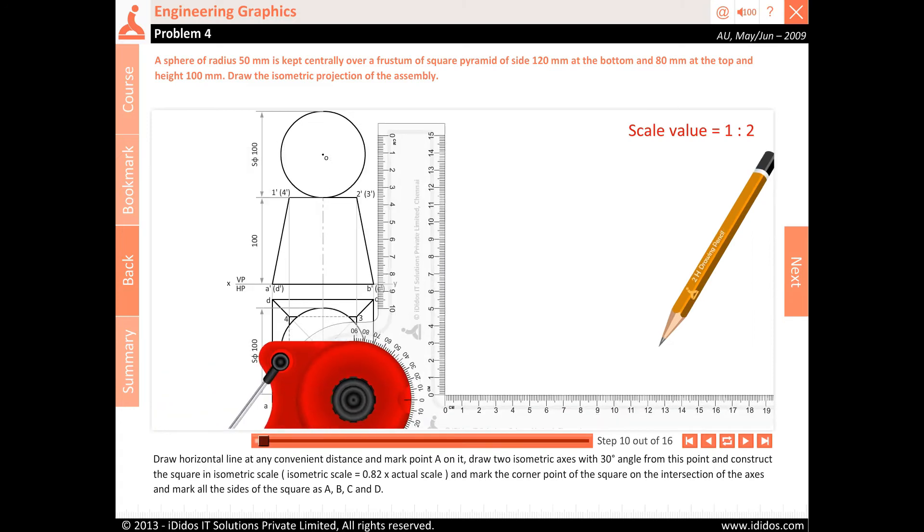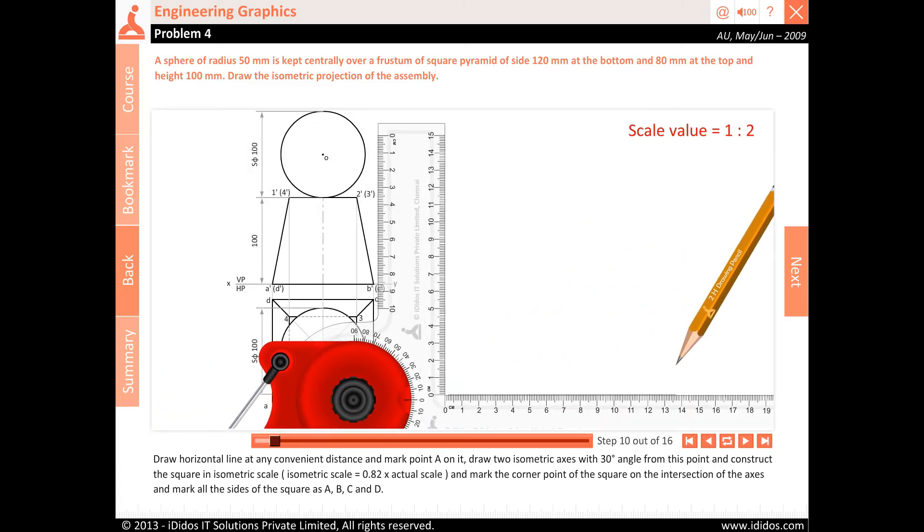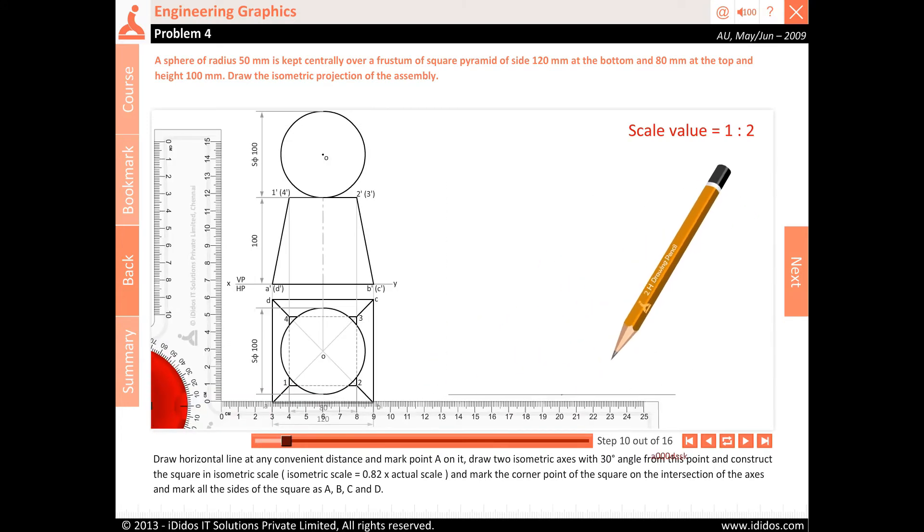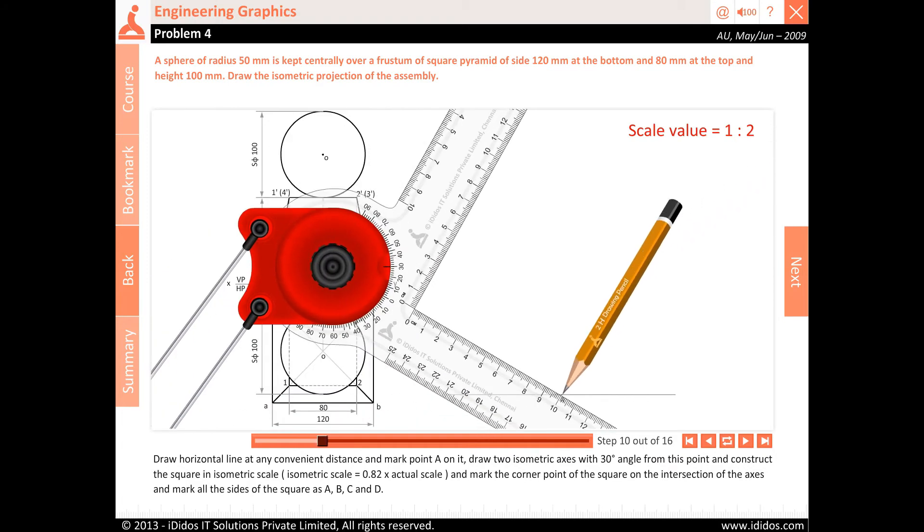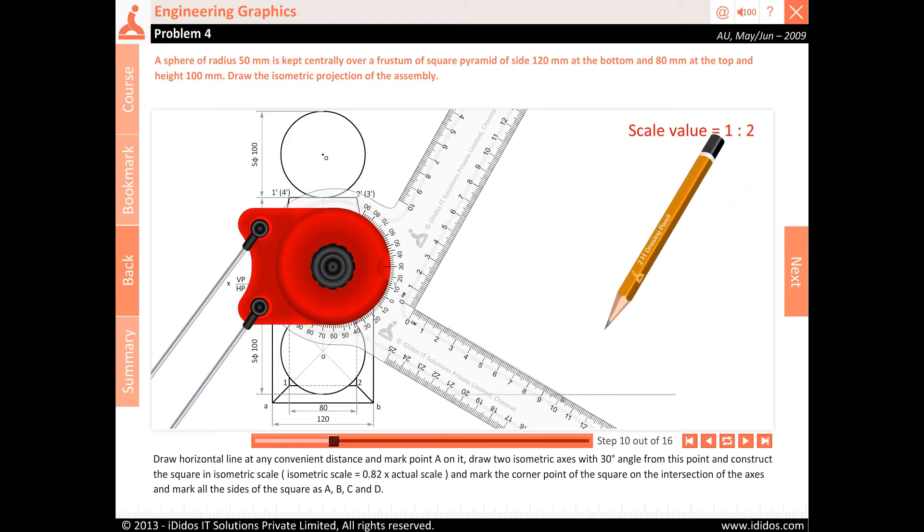Draw horizontal line at any convenient distance and mark point A on it. Draw two isometric axes with 30 degree angle from this point and construct the square in isometric scale.